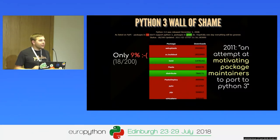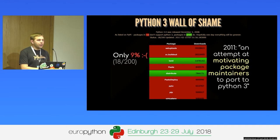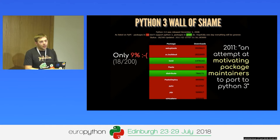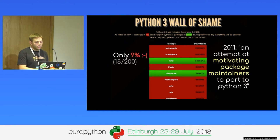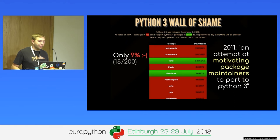In 2011, someone decided to create a website called the Python 3 Wall of Shame. The intent was not to blame authors but to motivate package maintainers to port their code to Python 3. When the website was created, only 9% of the top 200 modules were compatible with Python 3.